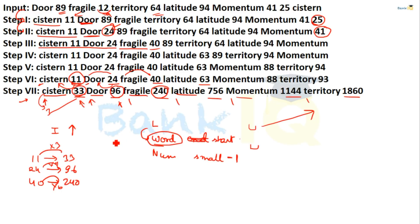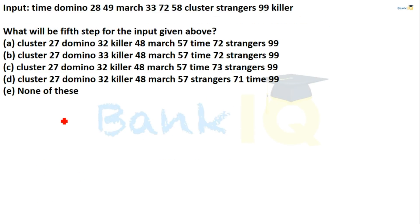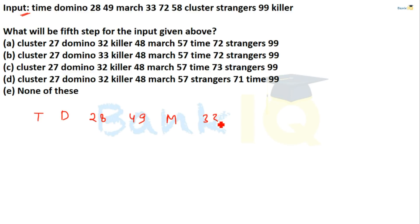Now let's solve the given input. The input is: T D 28 49 March 33 72 58 C S 99 K. We know that the arrangement depends on the initial letter of words and numbers increase step by step.